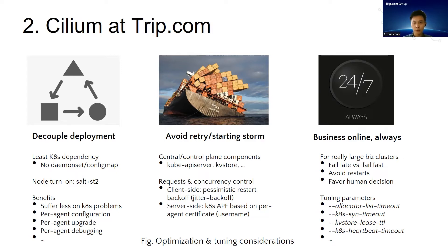Then back-off on failure. Besides, we also give each agent dedicated certificates, which enables Kubernetes to perform rate limiting on Cilium agents with APF. Trip.com provides online booking services worldwide, so at any time of day, a business service outage would lead to instantaneous losses. So we can't risk letting foundational services like networking restart themselves by a simple fast-failure rule, but favor necessary human interventions and decisions. In cases like Kube API Server or etcd failures, we'd like Cilium to be more patient — just wait and keep existing business uninterrupted, and let system developers and maintainers decide what to do next. Faster failure and automatic retries would just make things worse in such cases.